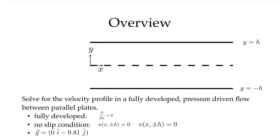Here's an overview of the problem that we're going to solve. We have a channel with the origin located in the center of the channel. This is the center line, x direction, y direction. The channel goes from y equals minus h to y equals h, so it has a total height of 2h.